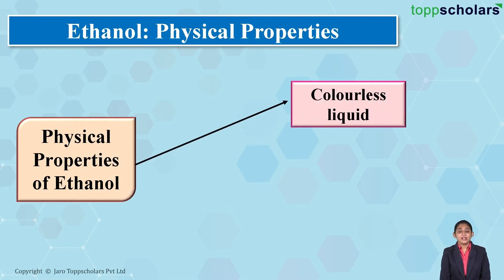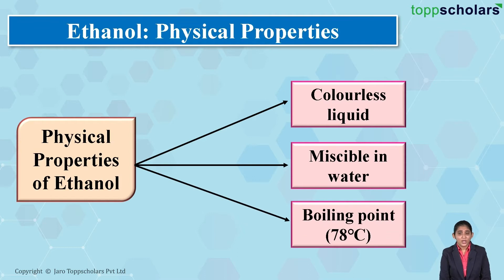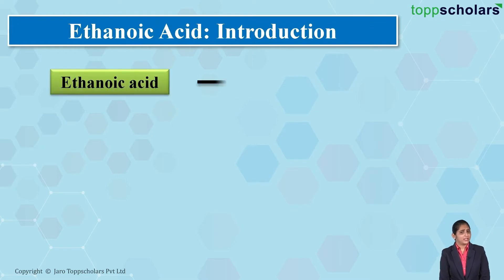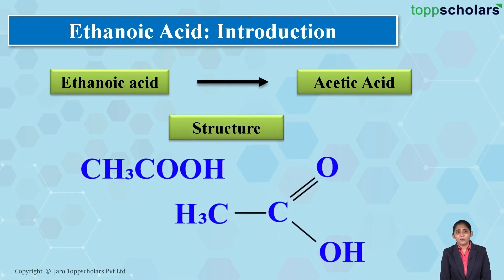Now let's discuss the physical properties of ethanol. Ethanol is a colorless liquid which is miscible in water in all proportions. Also, the boiling point of ethanol is about 78 degrees Celsius. Now let's talk about ethanoic acid.